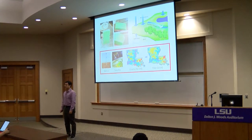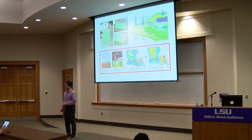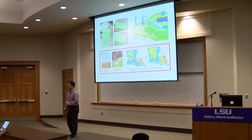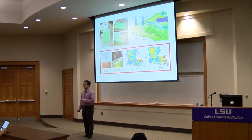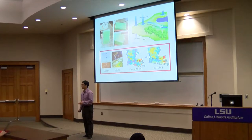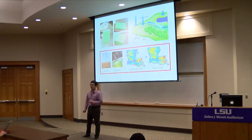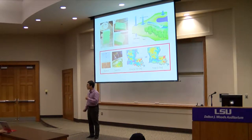August 2016, a dreadful flood took place in Louisiana. Over 140,000 homes were damaged and 13 people were confirmed dead. Floods take place frequently in coastal areas, but why do floods occur and how can we predict floods?